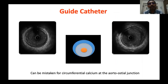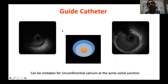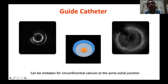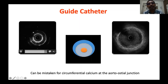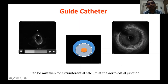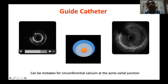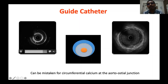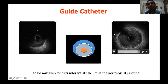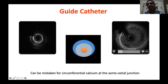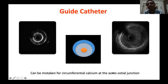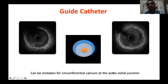The third artifact is the guide catheter artifact. Here you can see the guide catheter is deeply engaged into the artery. You should not mistake this for a calcified plaque at the ostium. This is the image when the guide catheter is inside — and this is the image when the guide catheter is removed. Do not mistake it for calcium at the ostium junction.